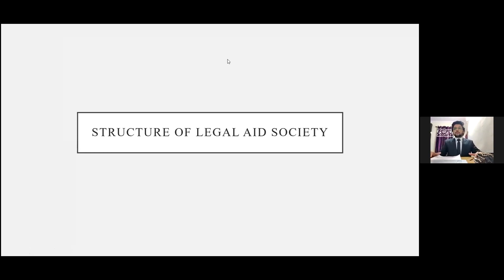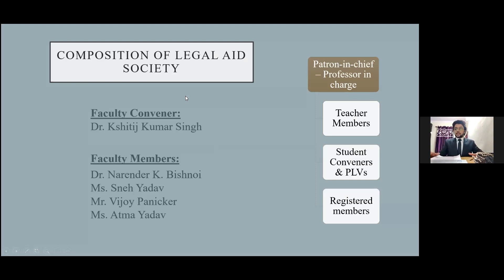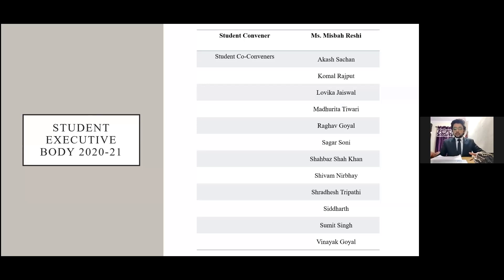Starting with the structure of the society from the top, we have the professor in charge of CLC as our patron-in-chief, followed by Dr. Shidit Singh as our faculty teacher, and then we have the following teachers as our faculty members as you can see in the presentation. To head the society and manage its affairs, we have an executive body consisting of students from both second year and third year, which is headed and coordinated by a student convener and a limited number of co-conveners. To be a member of the executive committee, a student needs to be a PLV.